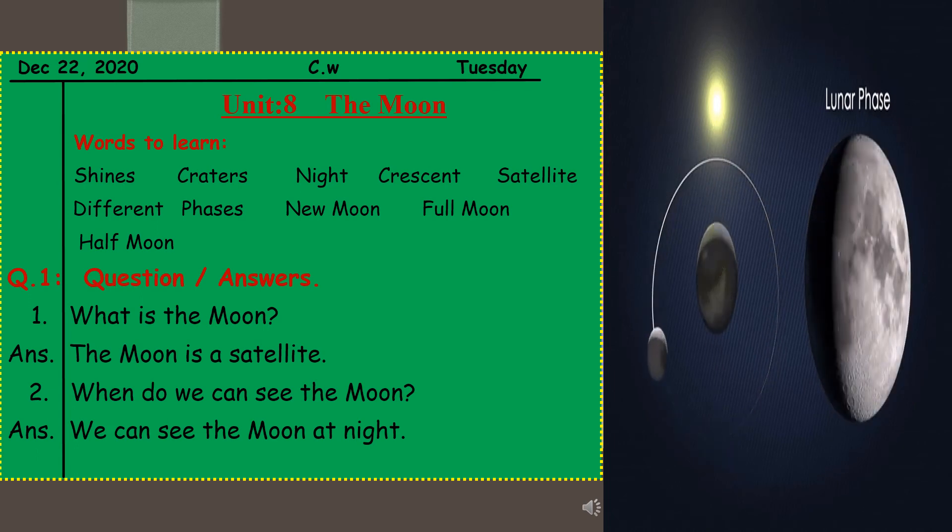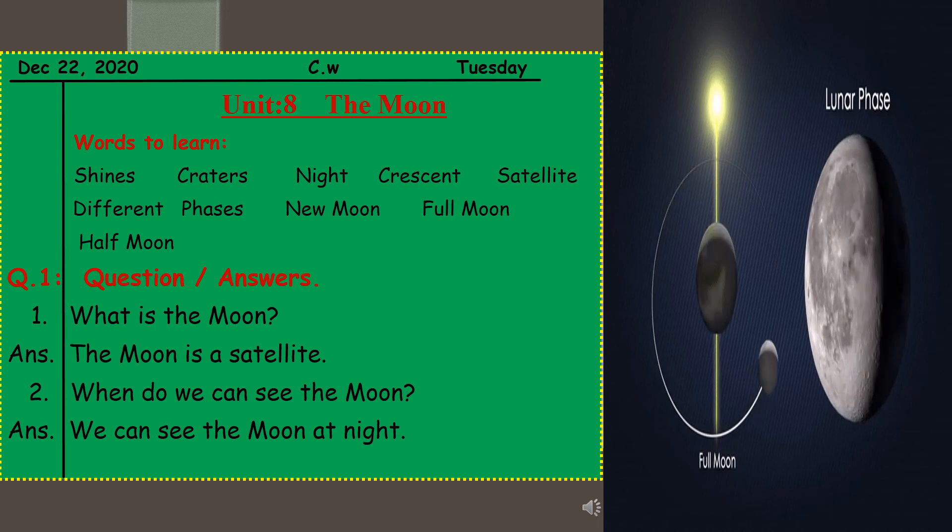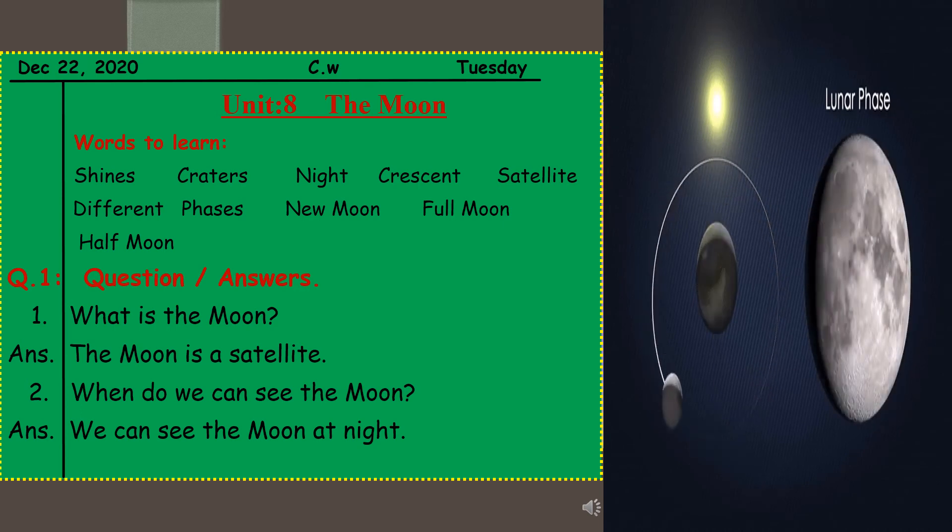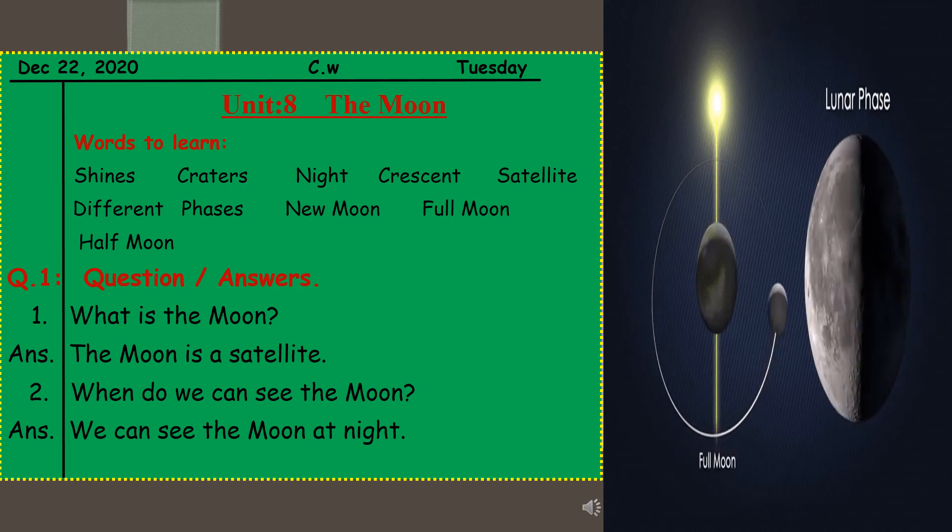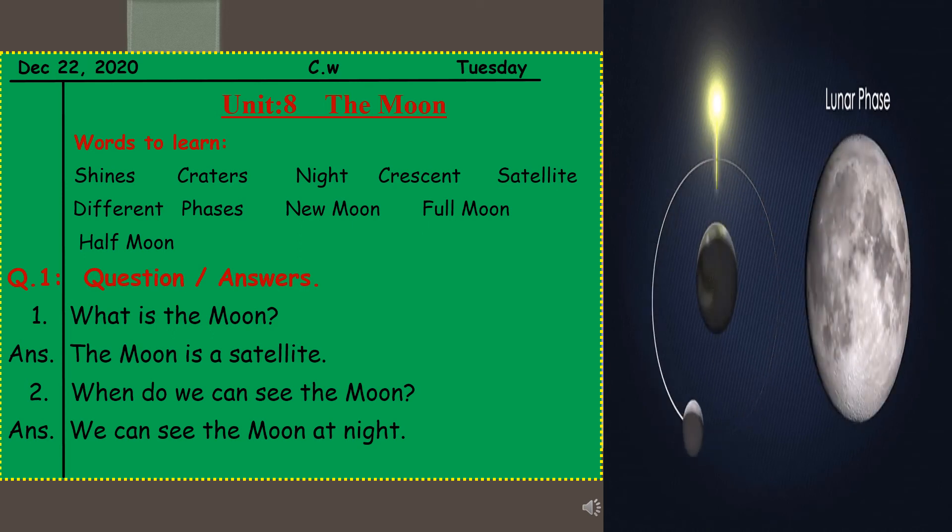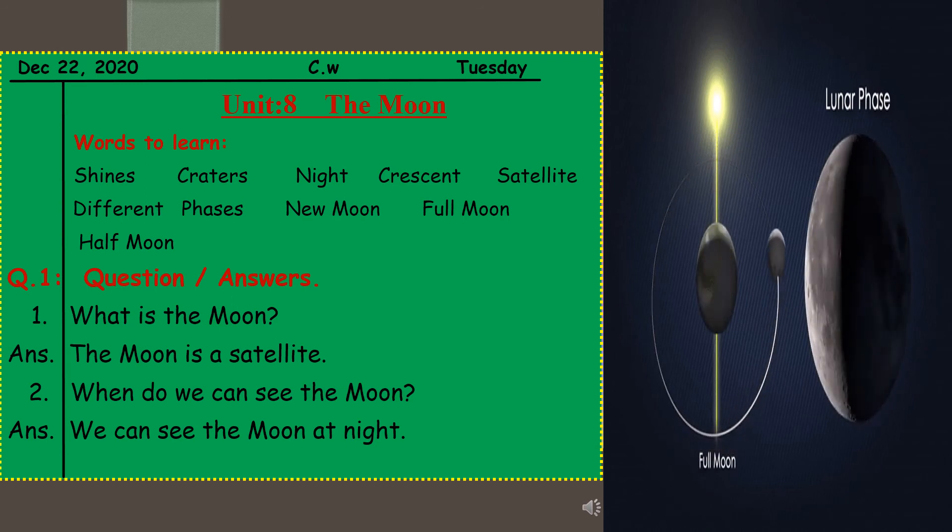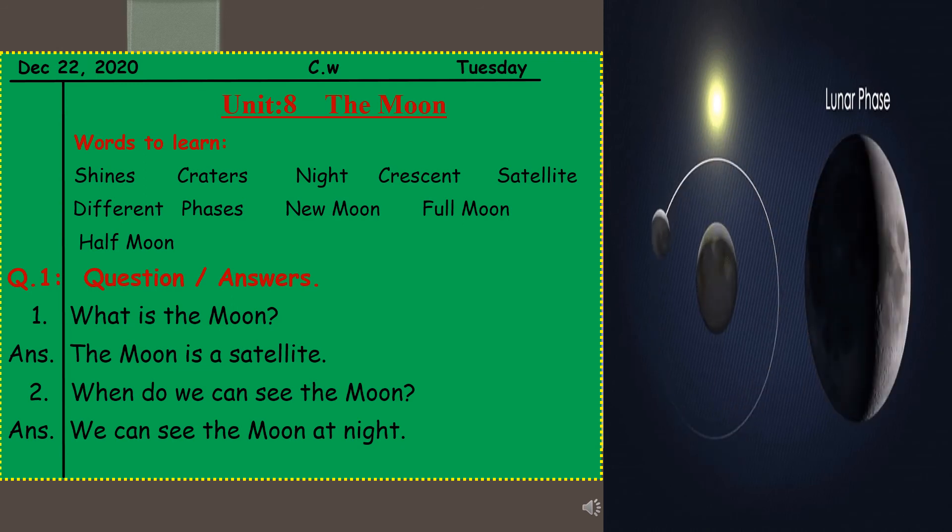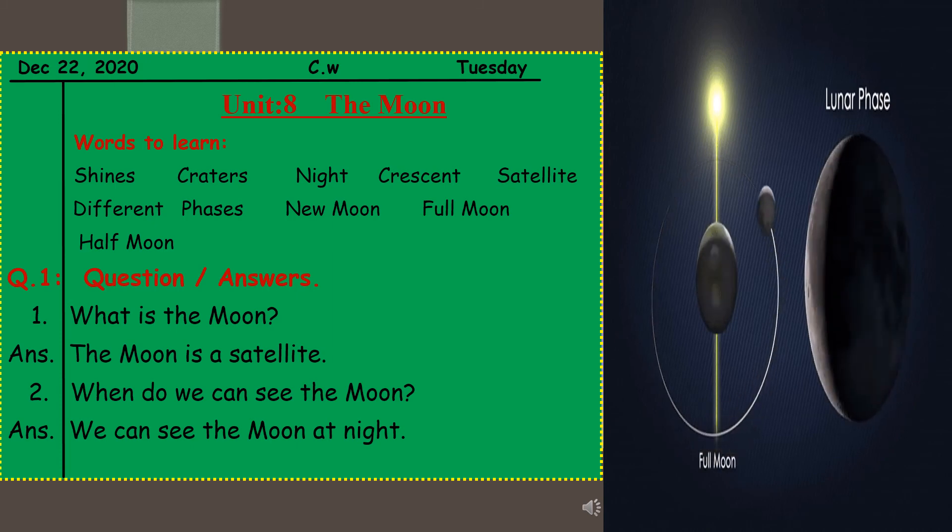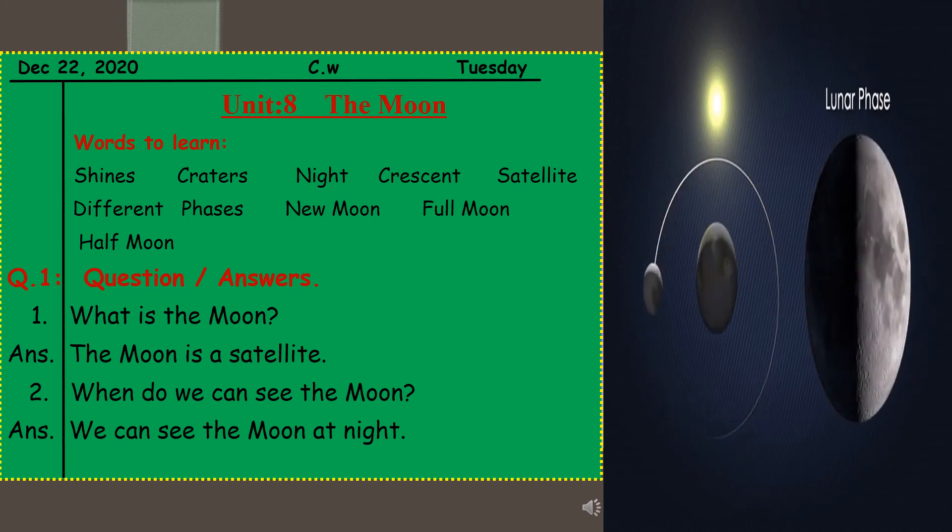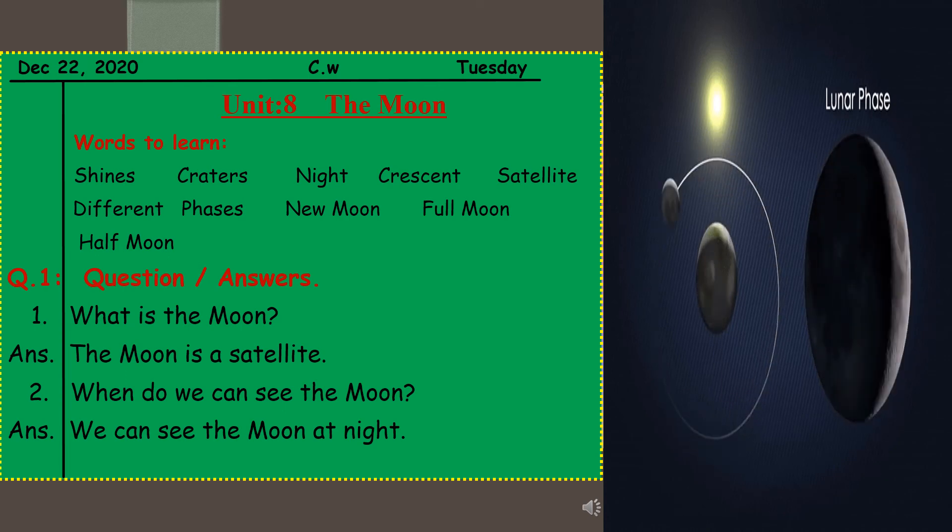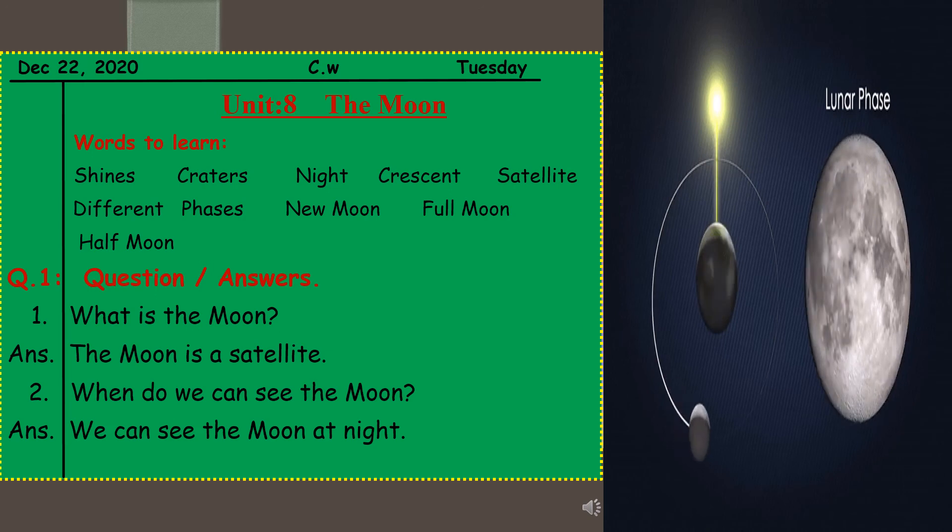Question number one is: what is the moon? What is the moon? Yes, the moon is a satellite. The moon is a satellite. Why is it a satellite? Because I told you, an object, an object that is orbiting any planet is called a satellite, and moon is orbiting our planet Earth, so it is called a satellite.